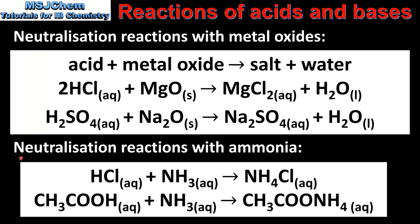Next we have neutralization reactions with ammonia. In our first reaction hydrochloric acid reacts with ammonia to form ammonium chloride. In the second reaction ethanoic acid reacts with ammonia to form ammonium ethanoate. Note that in reactions between an acid and ammonia there is only one product formed.